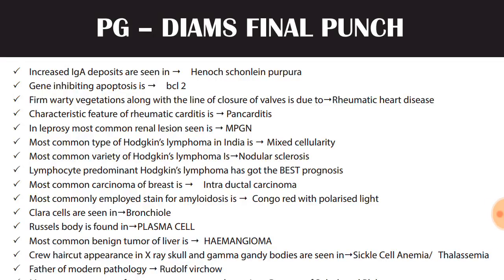Hello friends, this is PGDIMS final punch. What I am reading covers around 2000-2500 one-liners. This PDF is shared in two or three WhatsApp groups so everyone has it. I am taking the liberty of reading it, but the credit will go to PGDIMS. I am just reading out the material which is there in a common group. We will cover around 2000-2500 bits, posted in a series of 100 one-liners in each video.